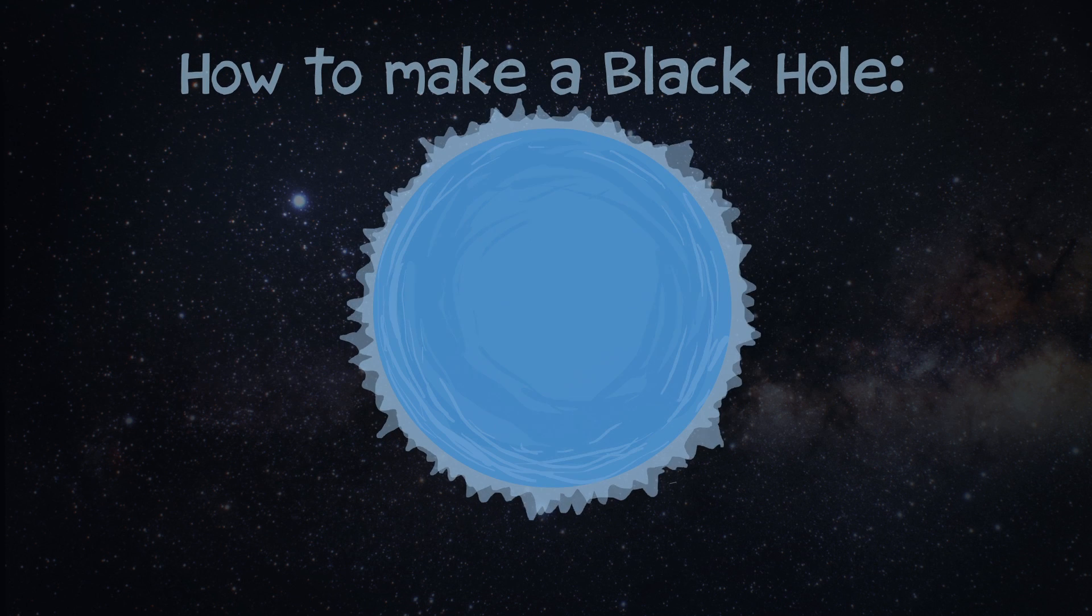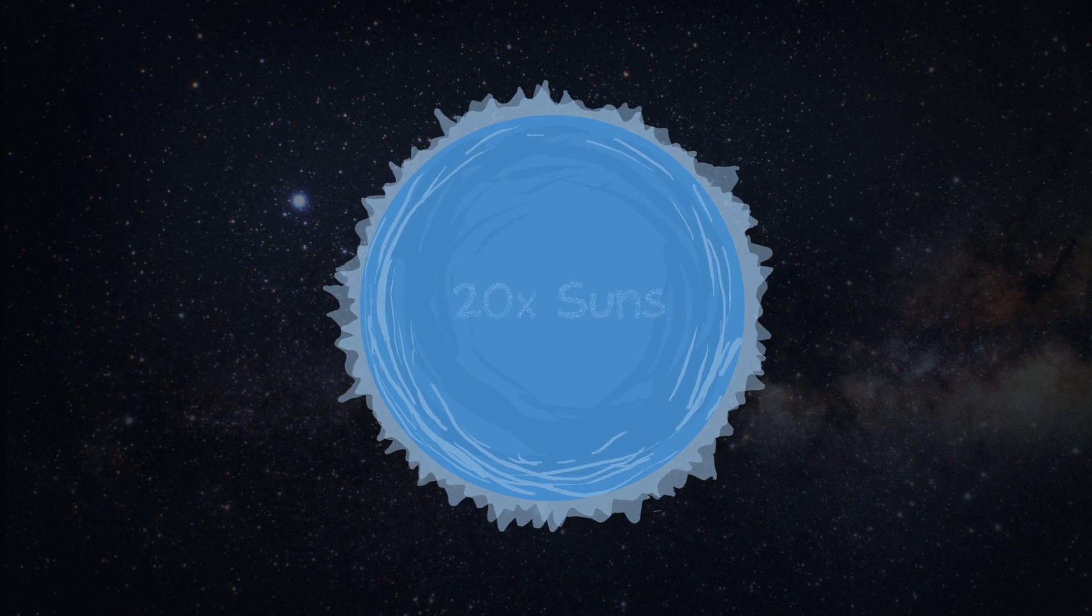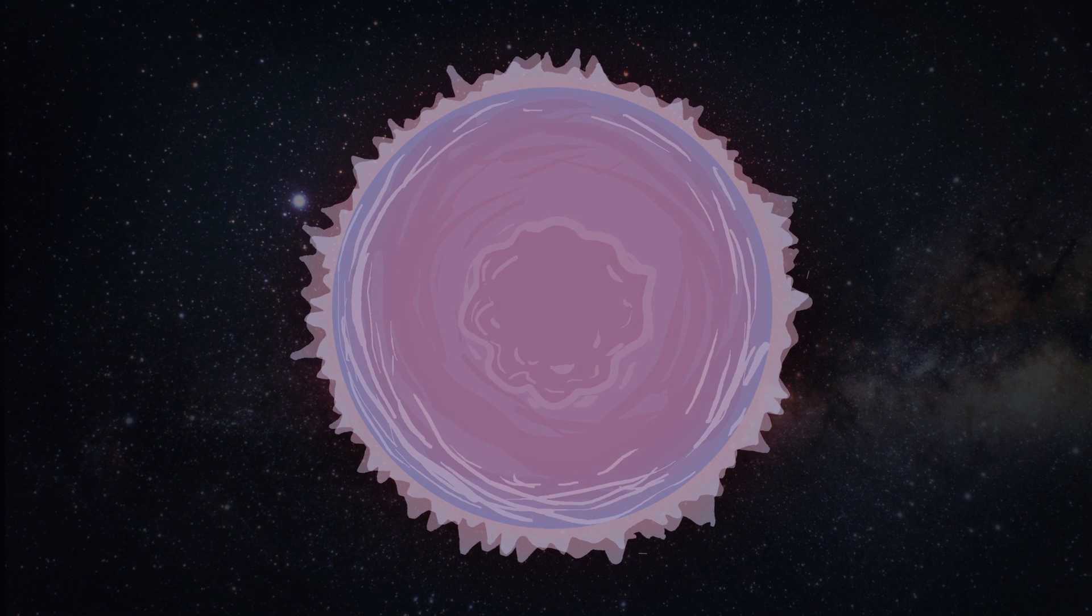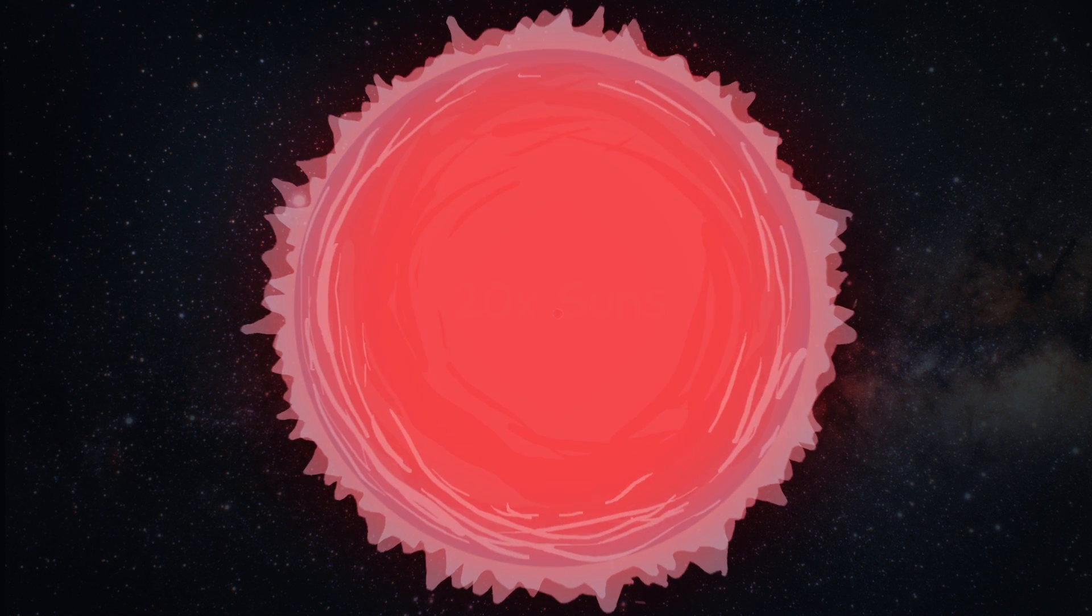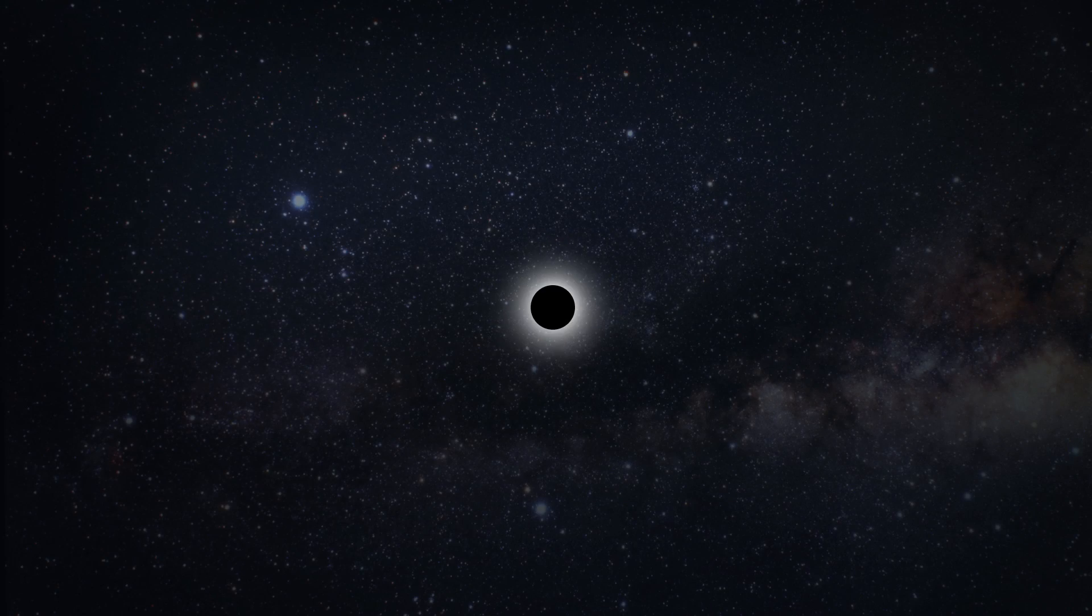One way to make a black hole is through the death of a star. If you have a star that is 20 times the mass of the sun or more, then as that star evolves through its life, it's going to explode as a supernova. And then what's left after the explosion is a black hole.